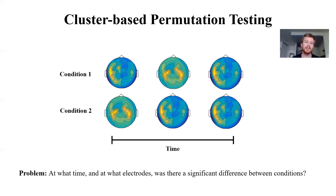What we're going to use is cluster-based permutation tests. This is essentially a way of answering: at what time and at what electrodes was there a significant difference between our two conditions?